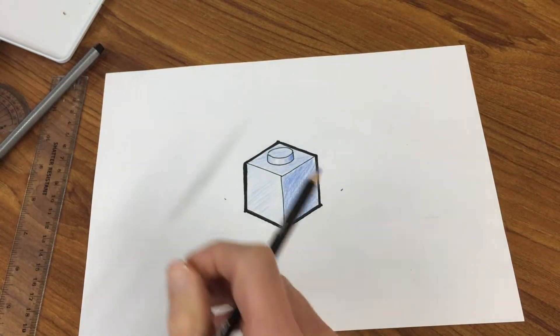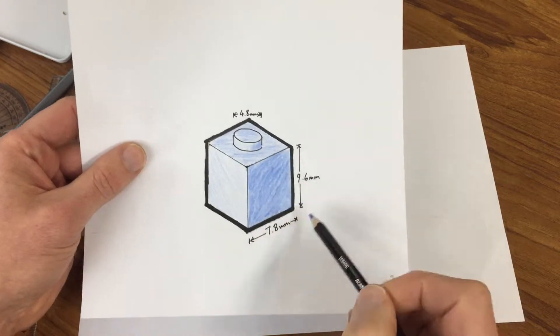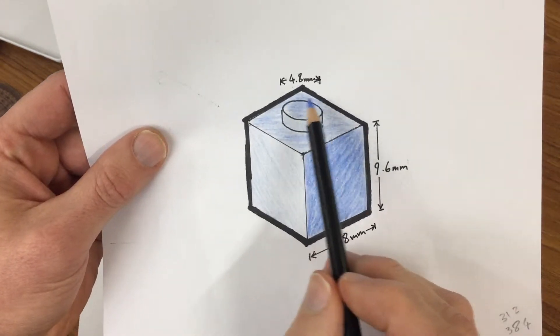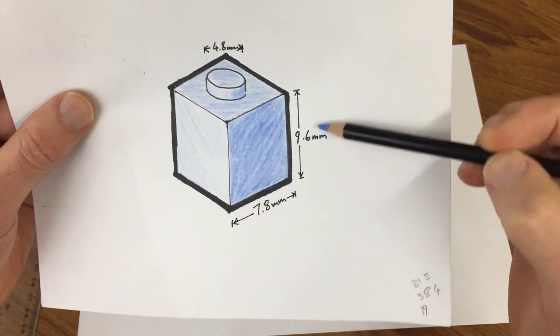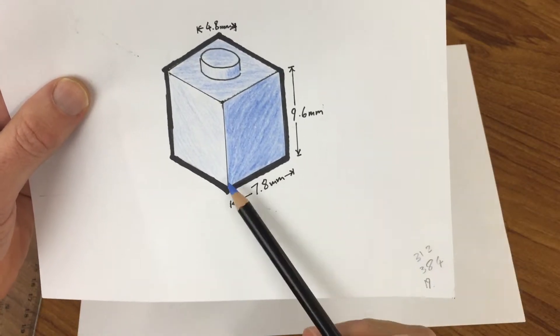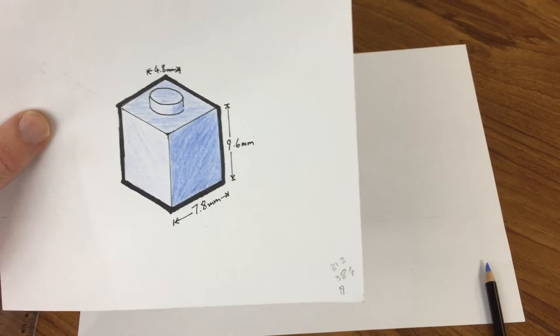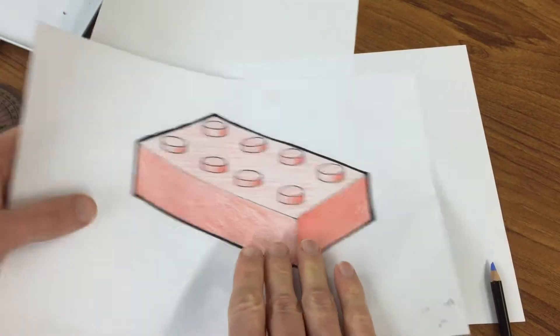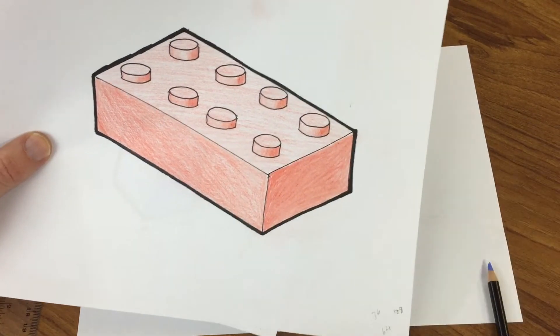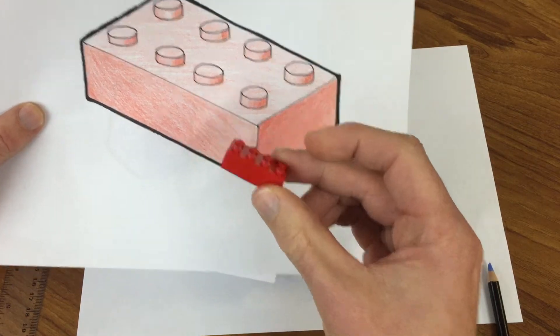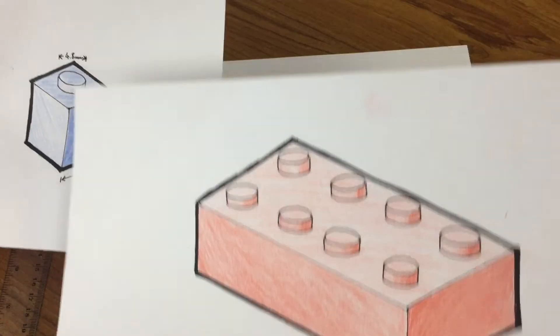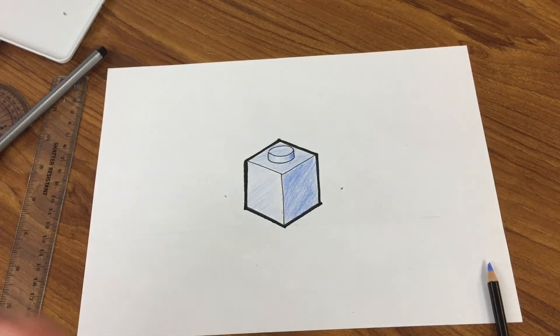Right, once that's done you could add your measurements. As I said, the diameter of that is 4.8 millimeters, the height is 9.6, and the width here is 7.8. And you could even then push yourself and challenge yourself to really go for it and do an all-out standard size Lego brick. Good luck!